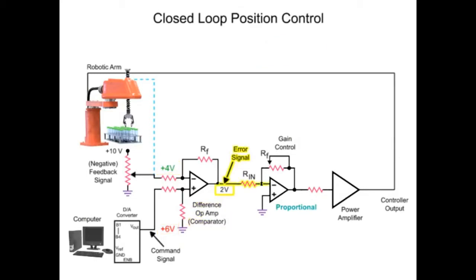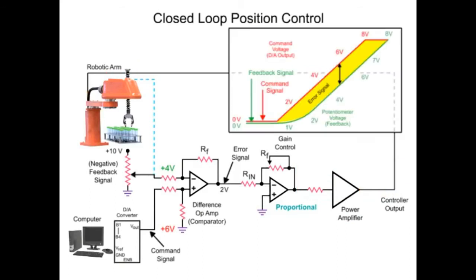The error signal is inverted by the proportional difference op-amp to a negative voltage. The voltage is then amplified by the power amp and inverted to a positive voltage and applied to the motor of the robotic arm. The robotic arm moves to the desired position until the error signal at the difference op-amp is zero. When the arm reaches the desired position, the difference op-amp voltage is reduced to zero and the feedback voltage from the potentiometer equals the command voltage of the computer.